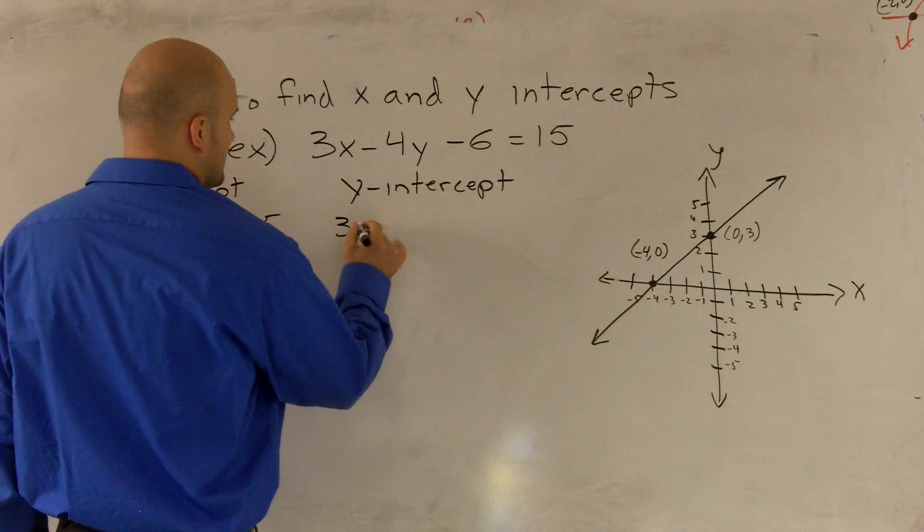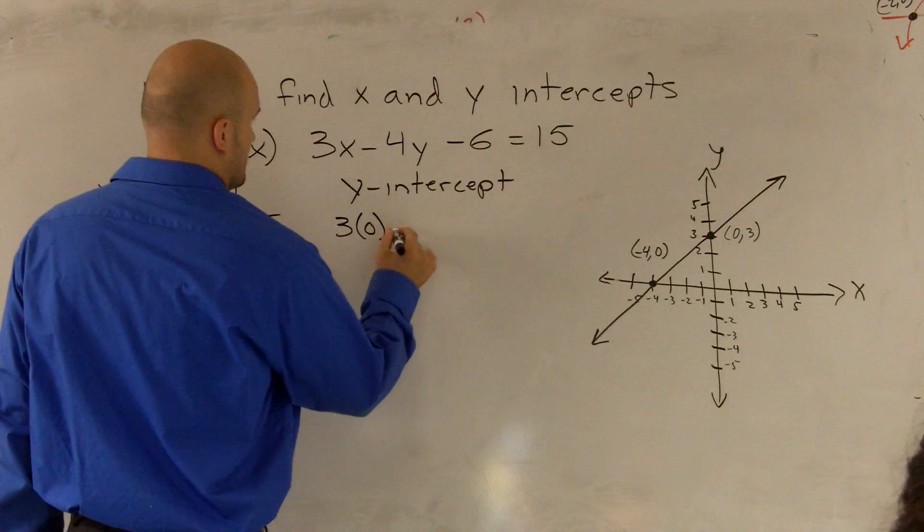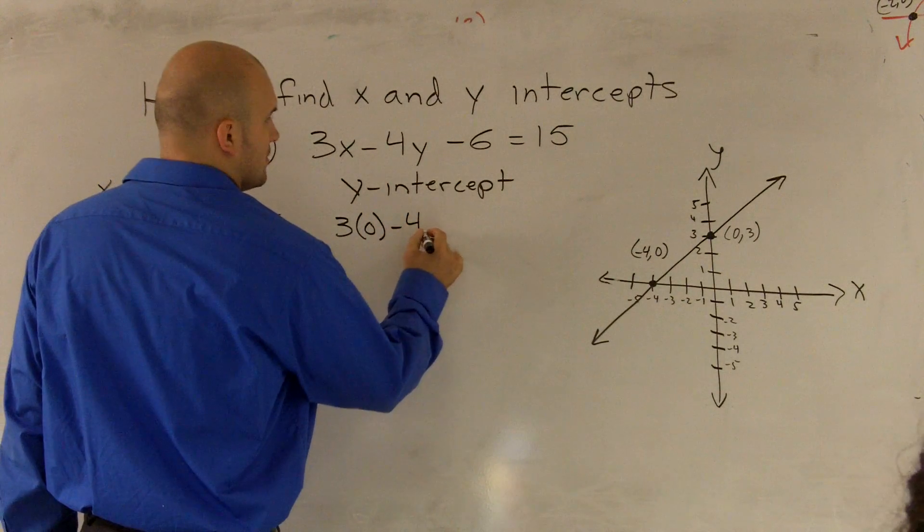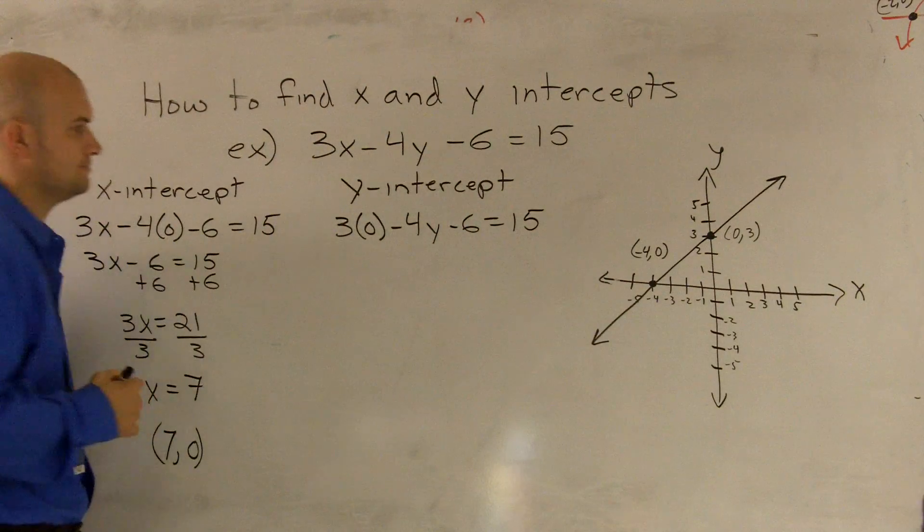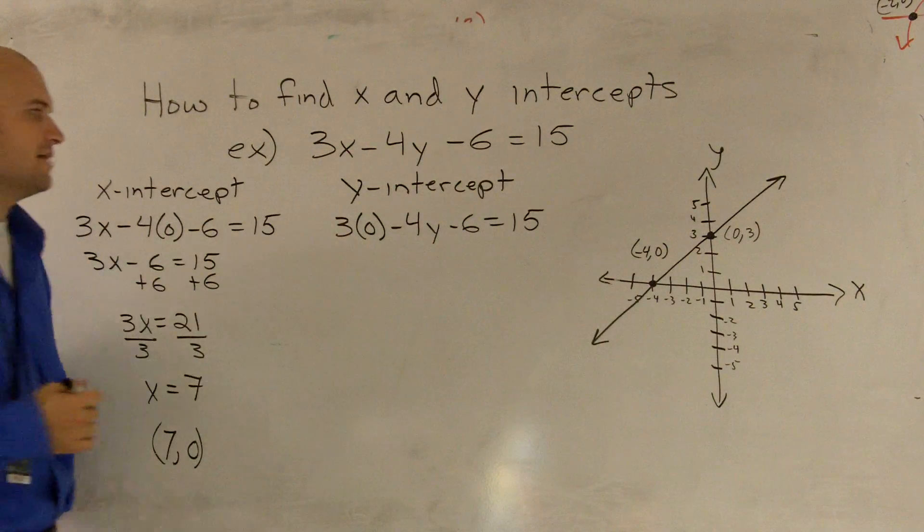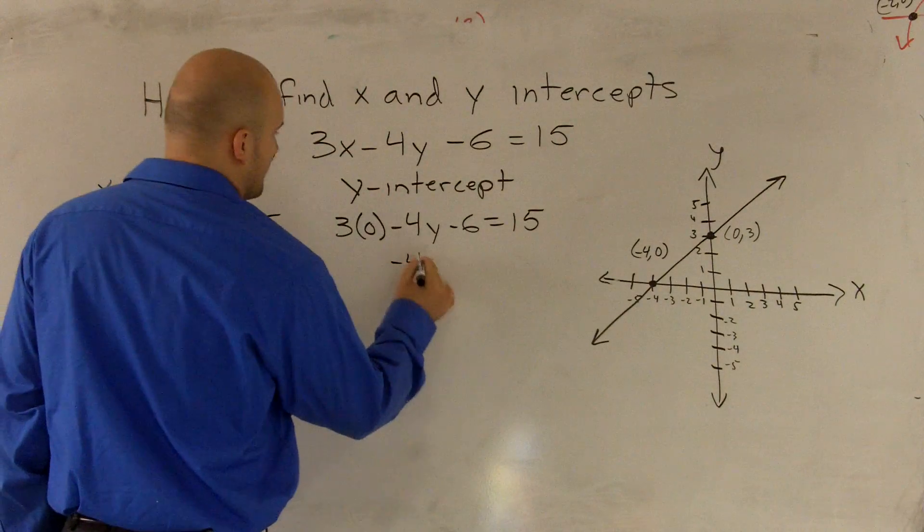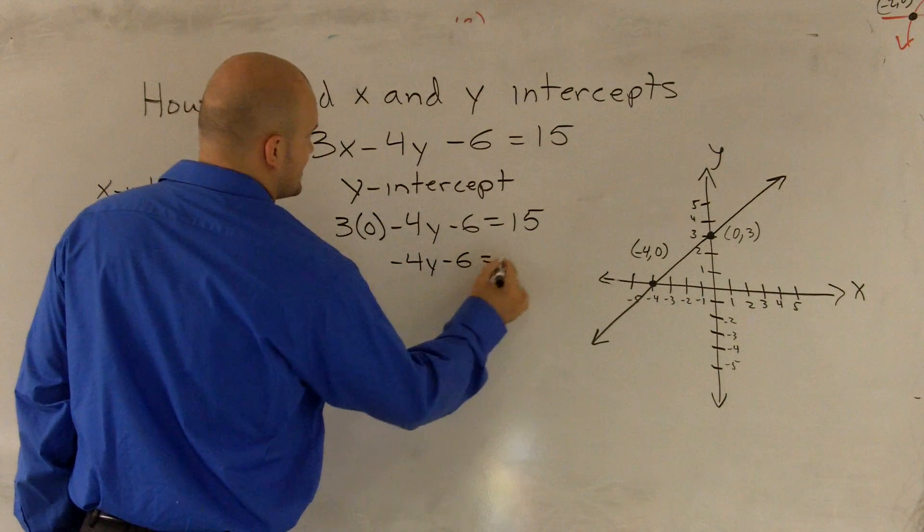So I have 3 times 0 minus 4y minus 6 equals 15. That obviously becomes 0.